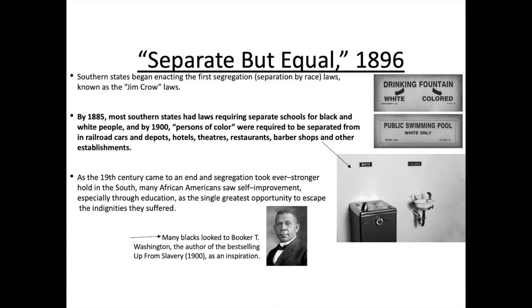This brings us to the idea from the starter — separate but equal. Southern states began enacting the first segregation laws known as the Jim Crow laws, which you would have seen in the video you just watched. By 1885, most southern states had laws requiring separate schools for black and white people, and by 1900, persons of colour were required to be separated in railroad cars and depots, hotels, theatres, restaurants, barbershops and other establishments — particularly schools, which we're going to look at in a moment.